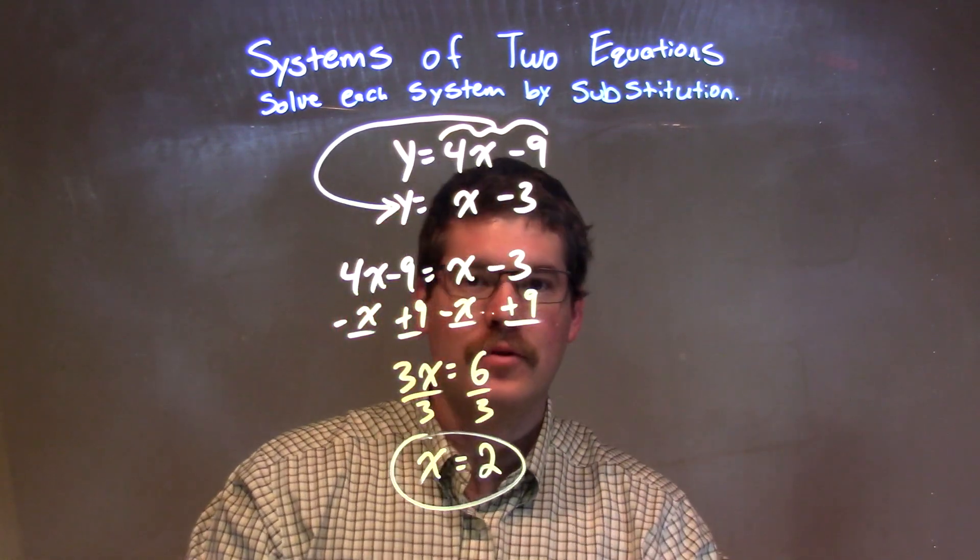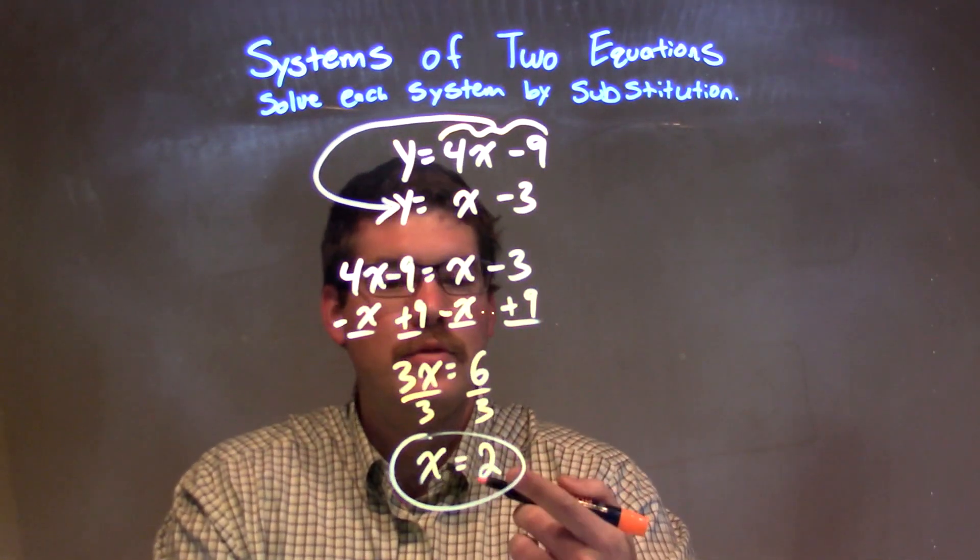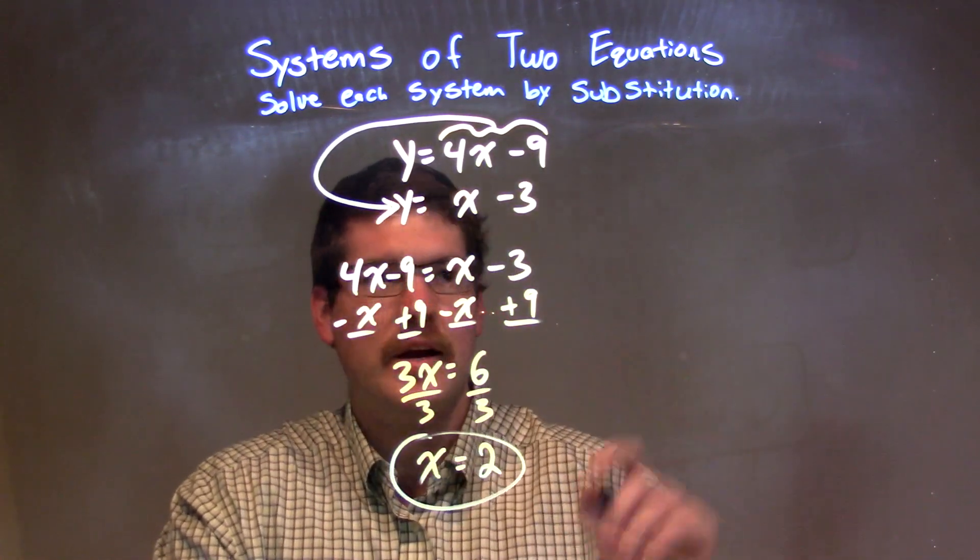We have one of our variables that we found the answer of: 2. We need to find the other one. So, I need to plug x equals 2, or 2 for x, into one of these equations. I'm going to pick the easier one. I think it's the second equation.